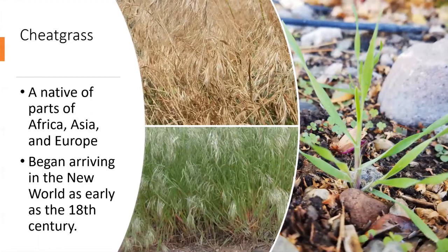Here are some images of cheatgrass — you can see a cheatgrass seedling on the right. Cheatgrass seedlings appear in the spring, but there can also be a second germination event in the fall after the monsoon rains. They then rapidly establish a monoculture, shown here on the bottom left, and you can see the seed heads that have formed.